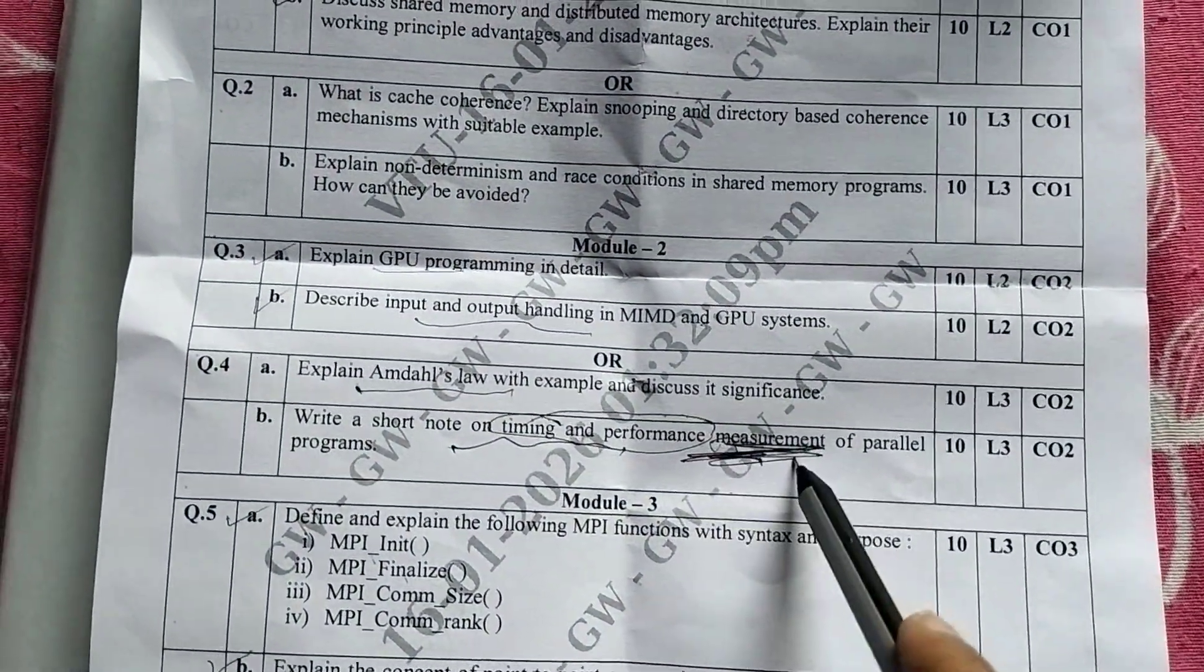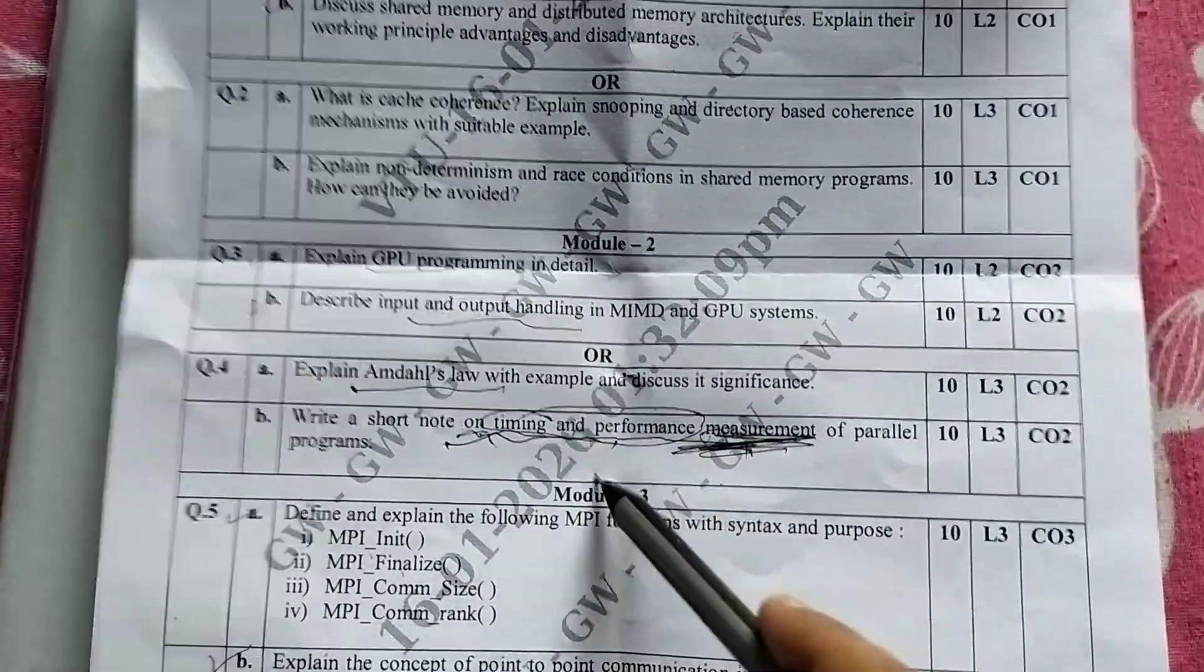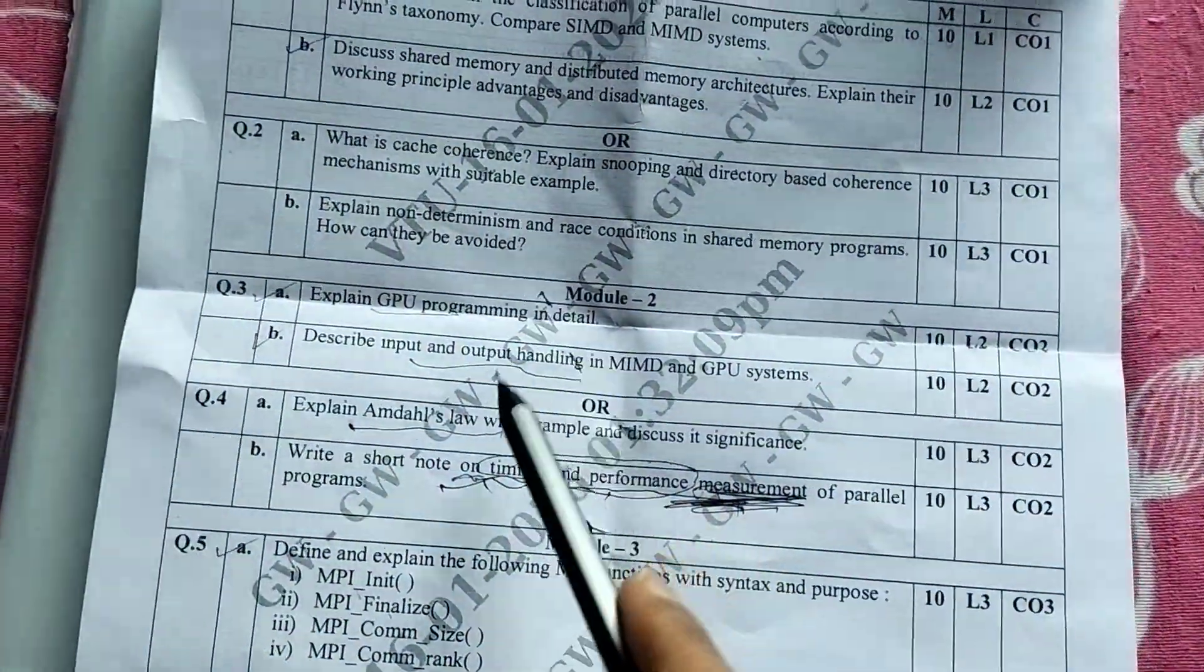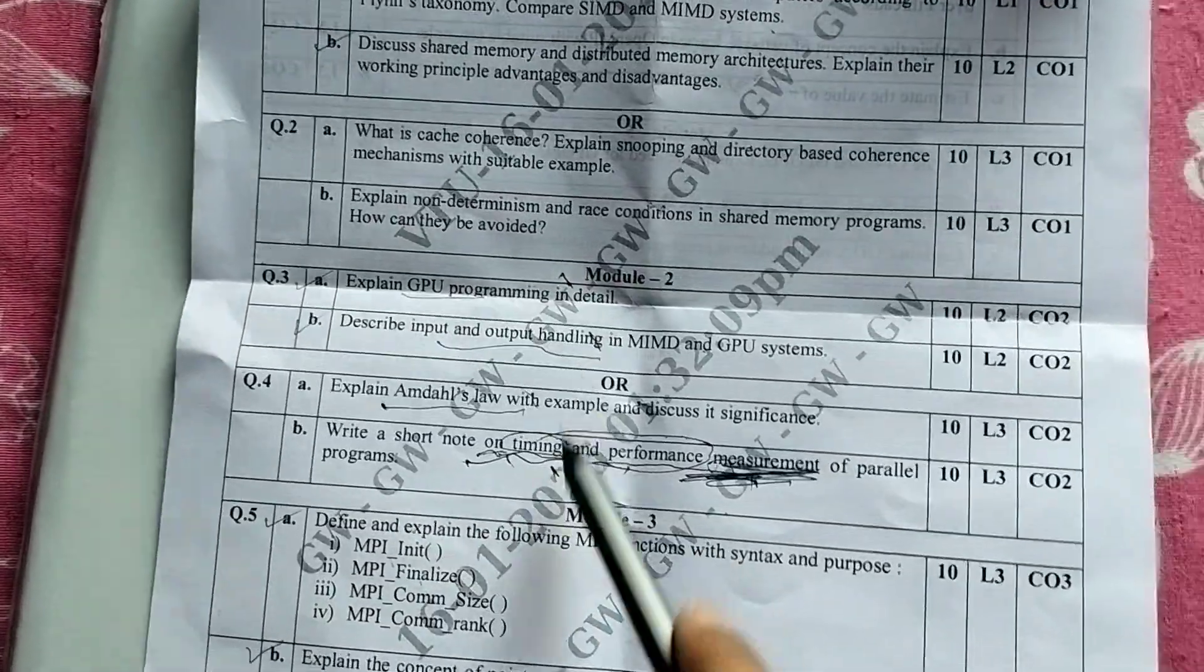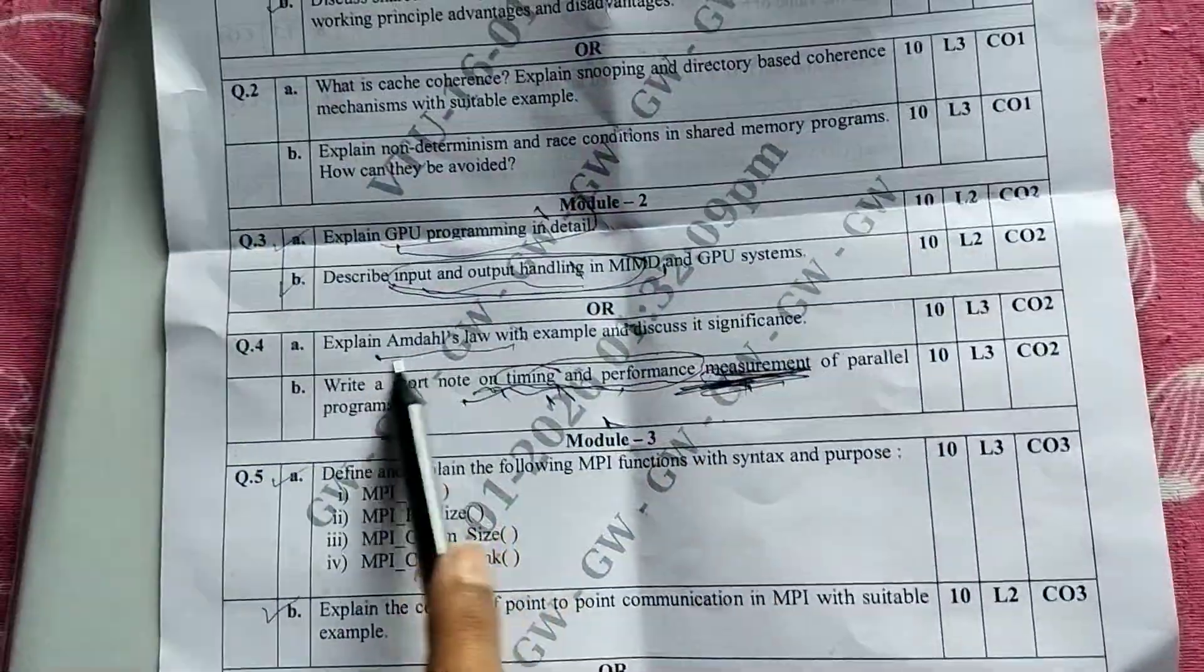I was thinking like, is it speedup and efficiency? Should I write this? What do you mean 'note on timing and performance'? No bro, I know this, I don't know this. So I was like, anyways I'll write this, and for input and output I'll write some story. Because for Amdahl's law...